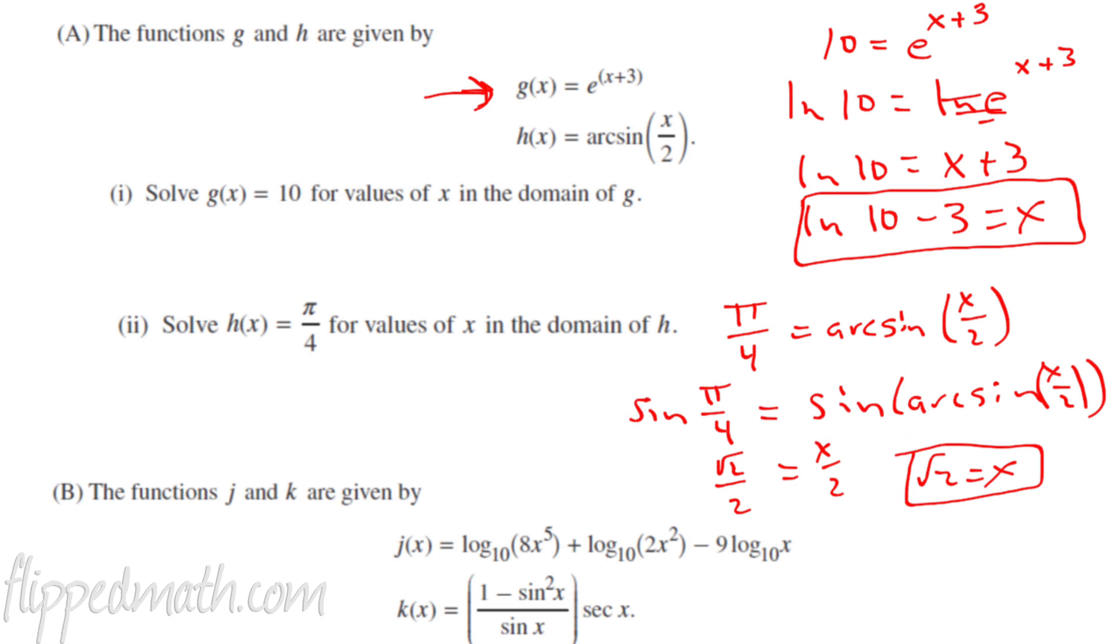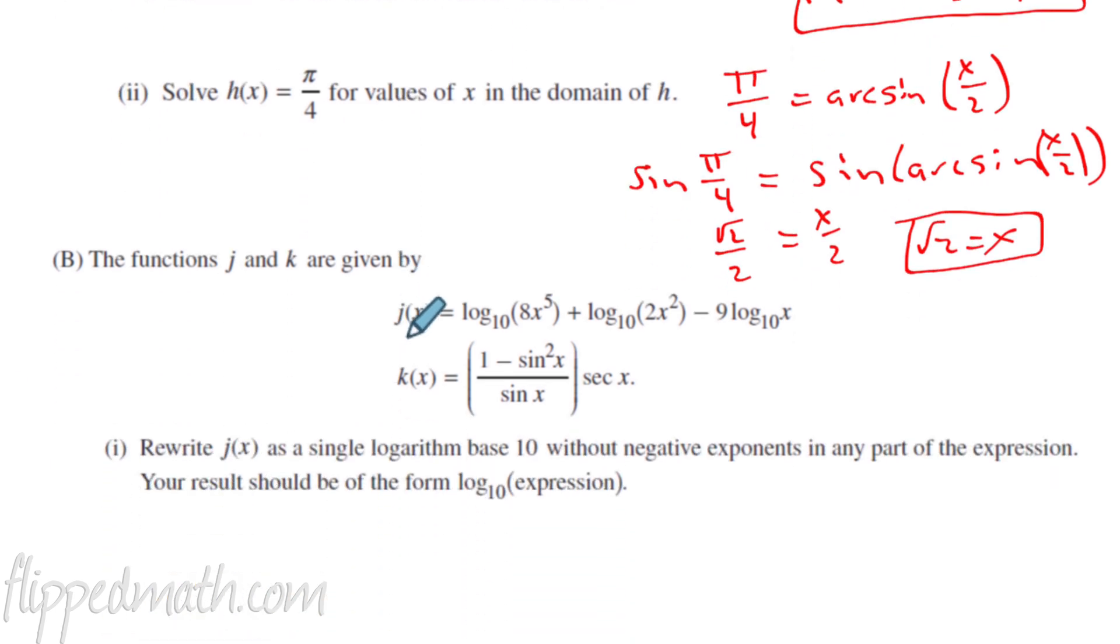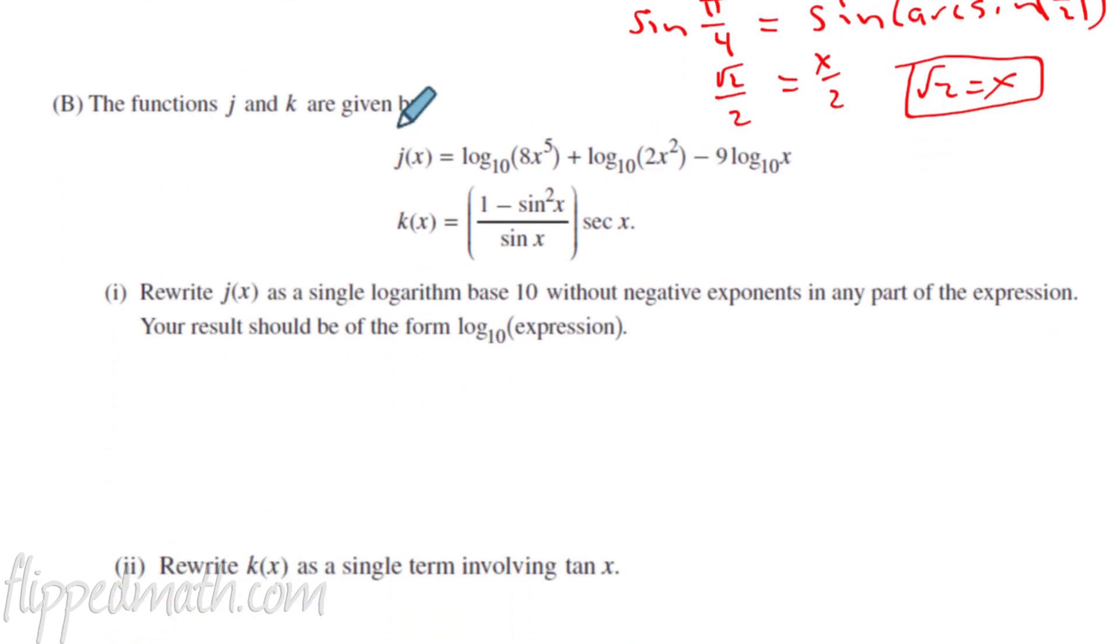Now the next one, part b, you have two functions here. j of x, you are obviously checking your exponent or your logarithm rules. So we're going to get j of x is going to equal here. Now, here's some of our rules. If you have a coefficient, it can go up as an exponent on the argument. That's called the argument. This is the argument. That's the argument. Now, the other thing that I tell my students, if you're going to condense these all into a single log, that any of these logs that are positive will end up in the top of the fraction.